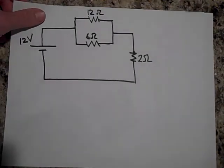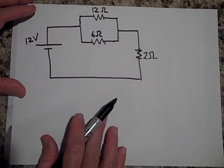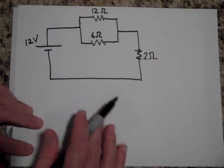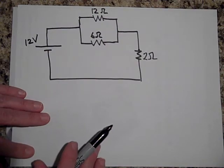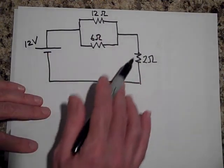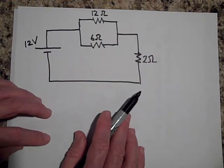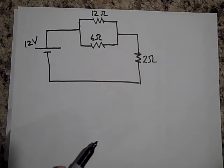So you have this circuit here. You got 12 volts. And first of all, could you just tell me, this is 12 ohms and 6 ohms and 2 ohms. Can you tell me which is going to get, of these resistors, which is going to get the most current and which is going to get the least current?